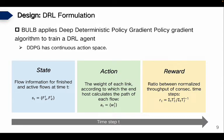BULB applies the DDPG algorithm to train the DRL agent. The state at time step T is defined as a set of active flows and finished flows. For active flows, it collects 5-tuples and byte counts. For finished flows, it also collects FCT and flow size. At each time step, the action is the weight of each link, according to which the end-host calculates the path of each flow. The reward function is the ratio between the average throughput of two consecutive time steps. A reward larger than one means the previous action resulted in higher average throughput. By maximizing cumulative rewards, we improve average throughput and also reduce FCT.